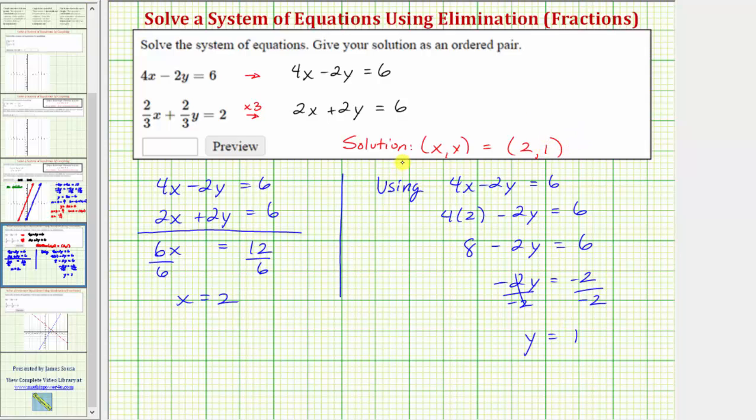So the solution to the system is the ordered pair two comma one. So in parentheses, we enter two comma one.